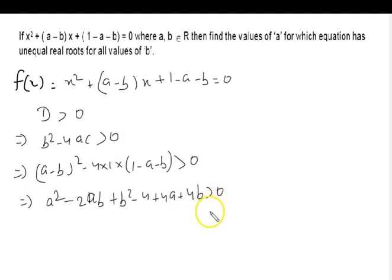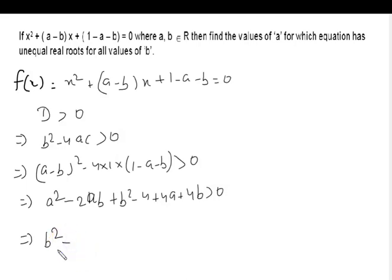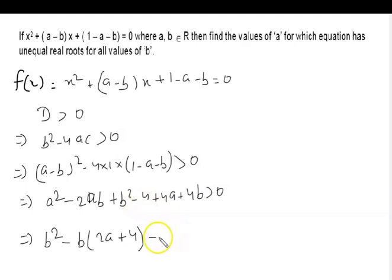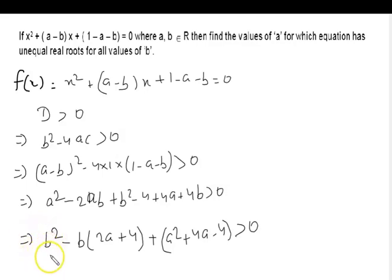Now we can write the terms. After taking b as a common from two terms, we get b squared minus b times (2a plus 4), minus a squared plus 4a minus 4, which is greater than 0. This is now in the form of a quadratic equation where the variable is b instead of x. For this to hold for all values, d must be less than 0.